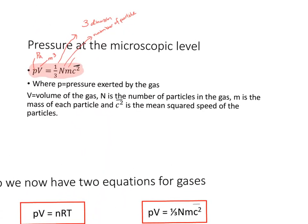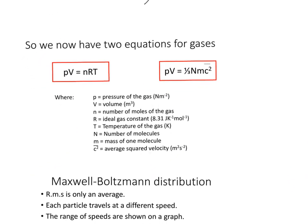c̄² is not the same as c_RMS — root mean squared speed. To summarize: we have two equations — PV = nRT and PV = ⅓Nm c̄². One uses number of moles, the other uses number of molecules, and you might also need to calculate the mass of something. You always need to choose the appropriate equation, but both relate to ideal gases.